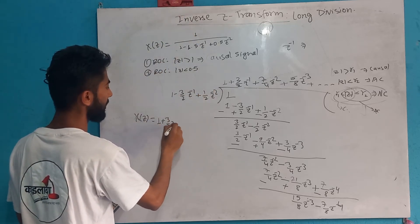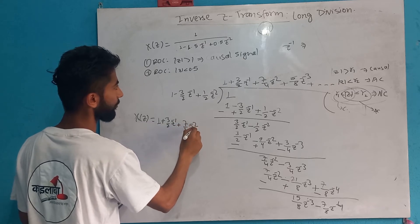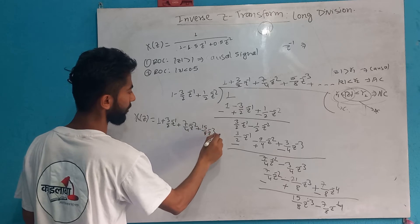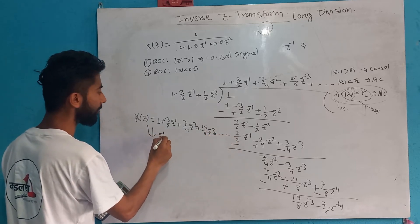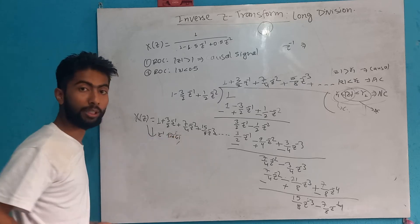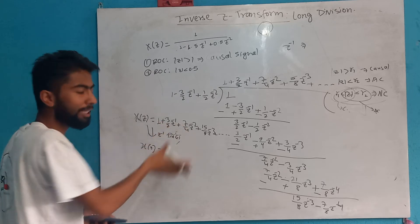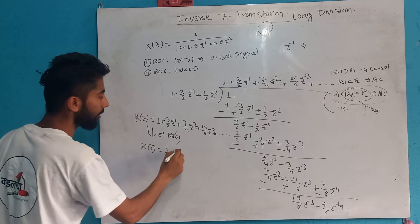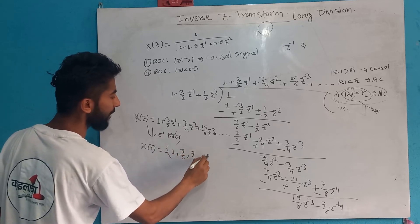So the result is: 1 plus 3/2 z-inverse plus 7/4 z to the power minus 2 plus 15/8 z to the power minus 3 plus dot dot dot. We will have the sequence y: directly putting 1, 3/2, 7/4, 15/8, dot dot dot. This will be the 0 position onward.